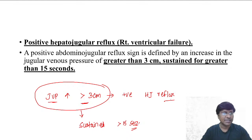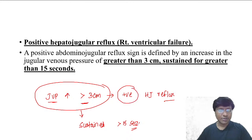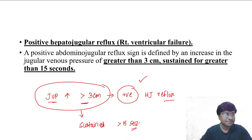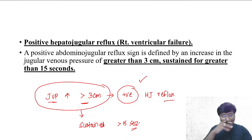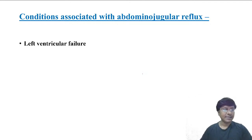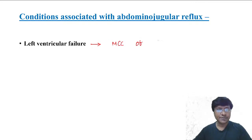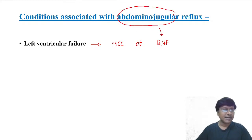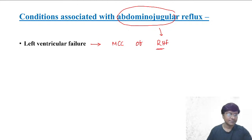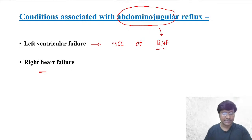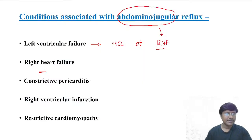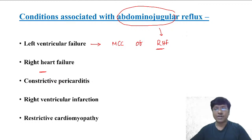What are the conditions where you will have a positive hepatojugular reflex? You will come across a positive hepatojugular reflex in left ventricular failure — because left ventricular failure is the most common cause of right heart failure. You will have a positive hepatojugular reflex in right heart failure, constrictive pericarditis, right ventricular infarction, and restrictive cardiomyopathy. These conditions are associated with the abdominal jugular reflex or positive hepatojugular reflex.